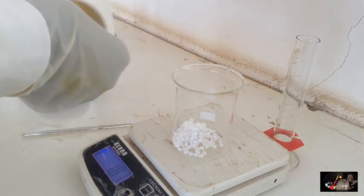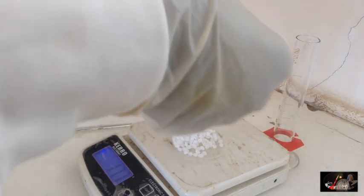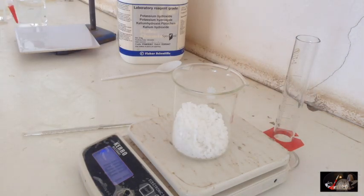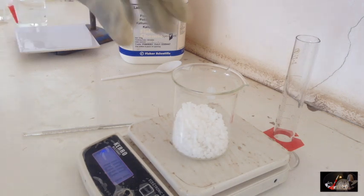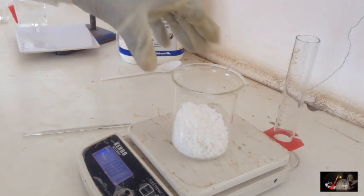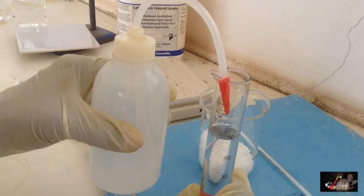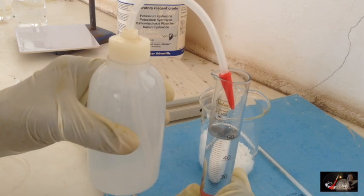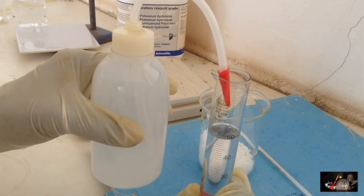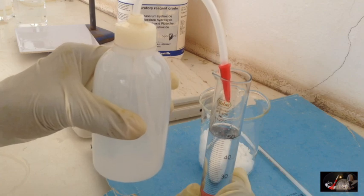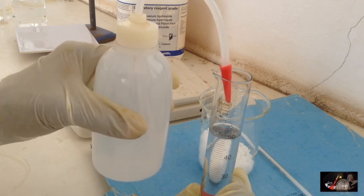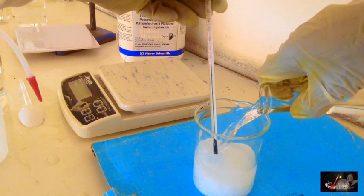To begin this process, you have to weigh 100 grams of the potassium hydroxide pellets. I will be using 300 grams of the KOH because of the quantity of KNO3 crystals I need. For every 100 grams of KOH, you need 200 milliliters of water to dissolve the salt. Be careful during this process as it is an exothermic reaction, meaning heat is given off.